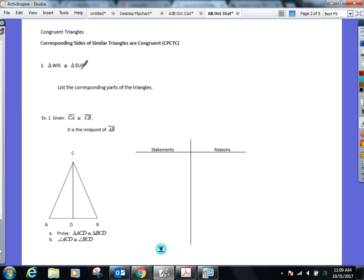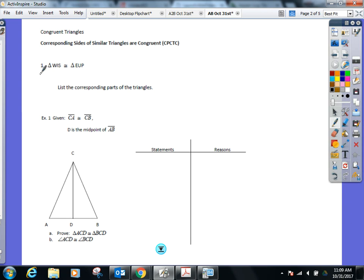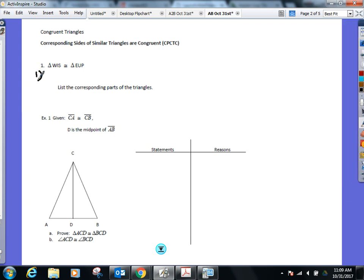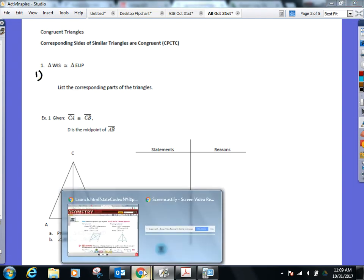Triangle WIS congruent to triangle EUP. I do not need to provide you with a diagram. You should not draw one. You should be able to tell me the six pairs of sides and angles that are congruent right now without even needing a diagram. How? Remember how you write it in a specific order. So all the angles and sides match up. So let's go to six different people right now.